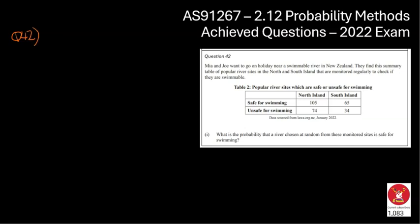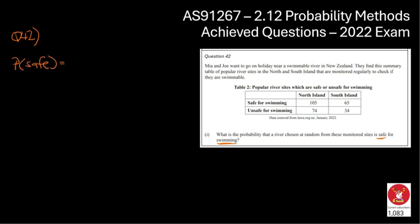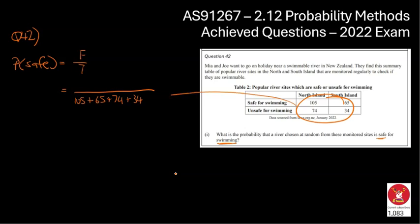We are now moving on to question number 42. Same theme — they've got some information about rivers. They found a summary of popular river sites in the North and South Islands — some unsafe, some safe, some in the North Island, some in the South Island. The question asks: what is the probability that a river chosen at random from these monitored sites is safe for swimming? The total number of rivers investigated is going to be 105 plus 65 plus 74 plus 34.